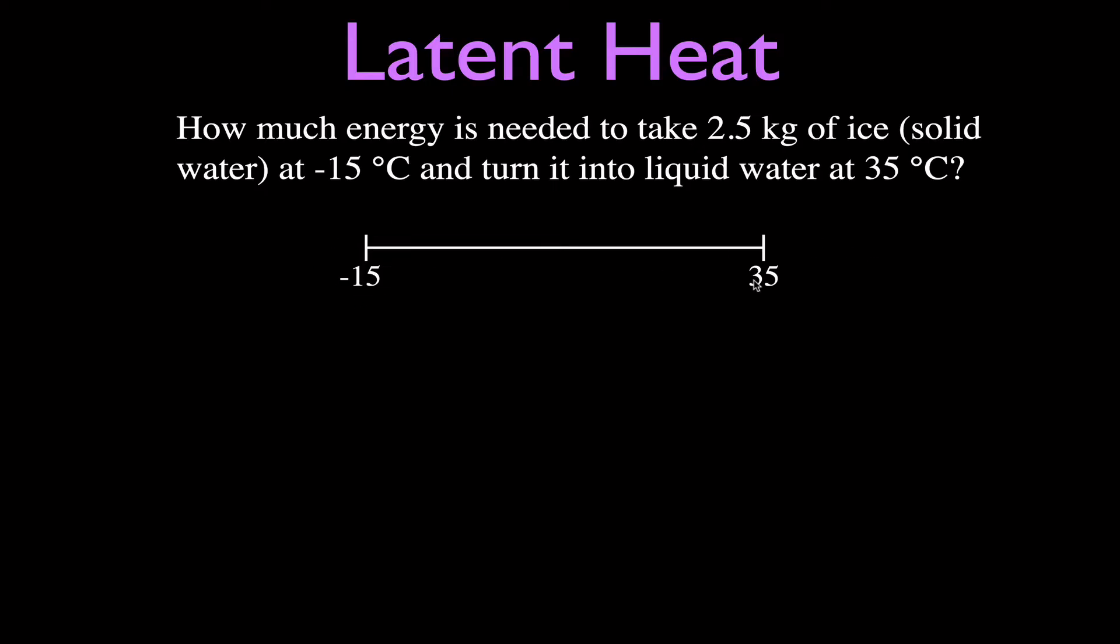I am going to be going from minus 15 to 35. I am going to have to go through, because this is water, the melting point at 0 degrees Celsius. That means I am going to have to add up three values. The first one is the amount of energy needed to raise the temperature from minus 15 to 0. That's when it is going to be a solid. And then number two, we are going to melt that substance when there is no temperature change. And number three is we are going to take the liquid and raise it up from 0 to 35 degrees Celsius.